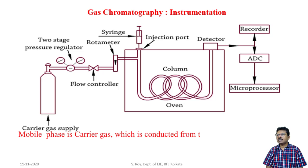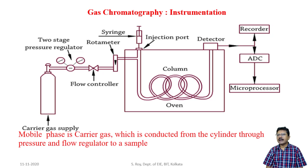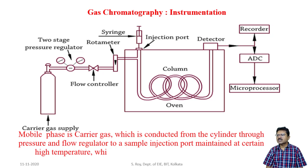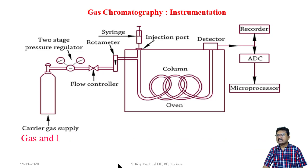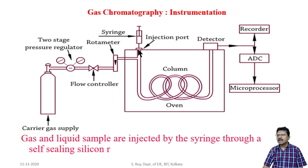The mobile phase — carrier gas — is conducted from the cylinder through a pressure and flow regulator to a sample injection port maintained at a certain temperature, which ensures rapid vaporization of the solute. These arrangements — pressure regulator, flow controller, and rotameter — are used to maintain a particular control of the carrier gas supply and to monitor its flow.